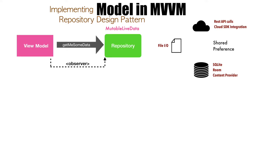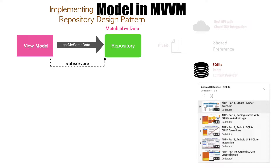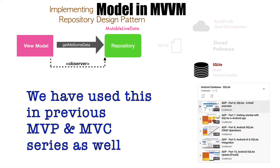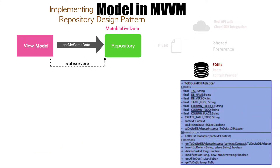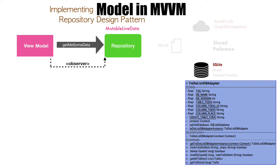To keep it simple, we will be only concentrating on how to implement it using SQLite. And if you don't know how to work with SQLite, I suggest that you have a look at the Android Database SQLite tutorial series that is already there on CoTutor. Because the intent of this series is to concentrate on MVVM, not to go through SQLite. So assuming that you understand how SQLite works, you would have already been familiar with the to-do list DB adapter that we had implemented in this particular series. We have used this to-do list DB adapter in the previous MVP and MVC series as well.